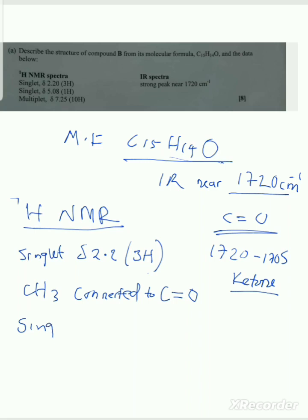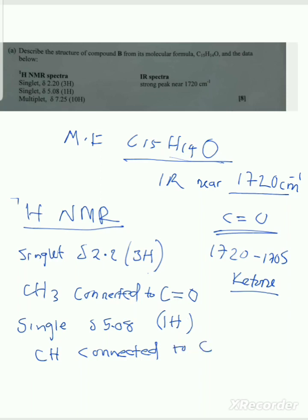The next signal is also a singlet at 5.08 ppm with an integration of 1H. Again, a singlet means it is connected to a carbon with no adjacent hydrogens. With only one hydrogen, this is a CH group. It is connected to the carbonyl group, which is the carbon in our formula that carries no adjacent hydrogens, but CH still has two remaining bonds to connect to other groups to be stable.